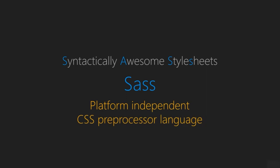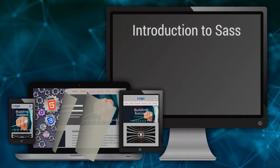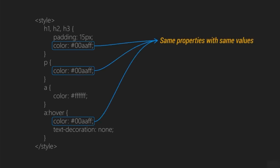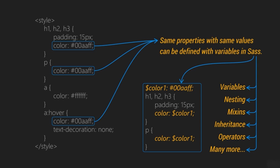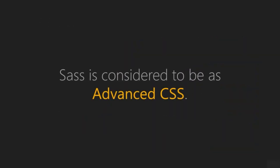Syntactically Awesome Style Sheets, or SASS, is a platform-independent CSS pre-processor language which comes with advanced features for styling web pages. In CSS you do not have variables, so SASS gives you the facility to use variables. Not only variables, there are many other features you will be able to use — for example, variables, mixins, etc. It is an extension to CSS but more advanced compared to it.